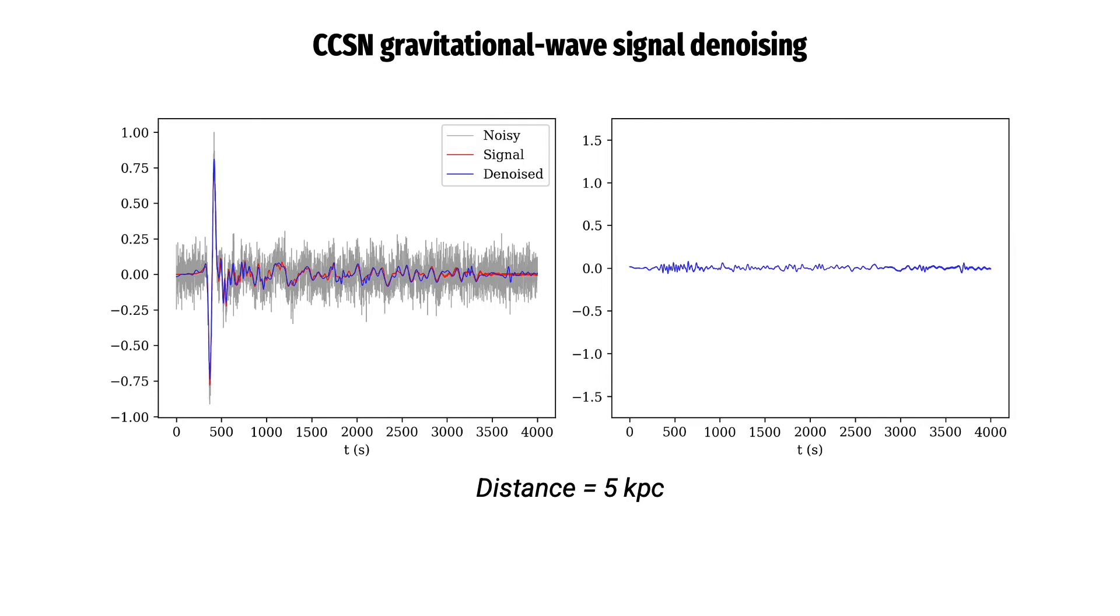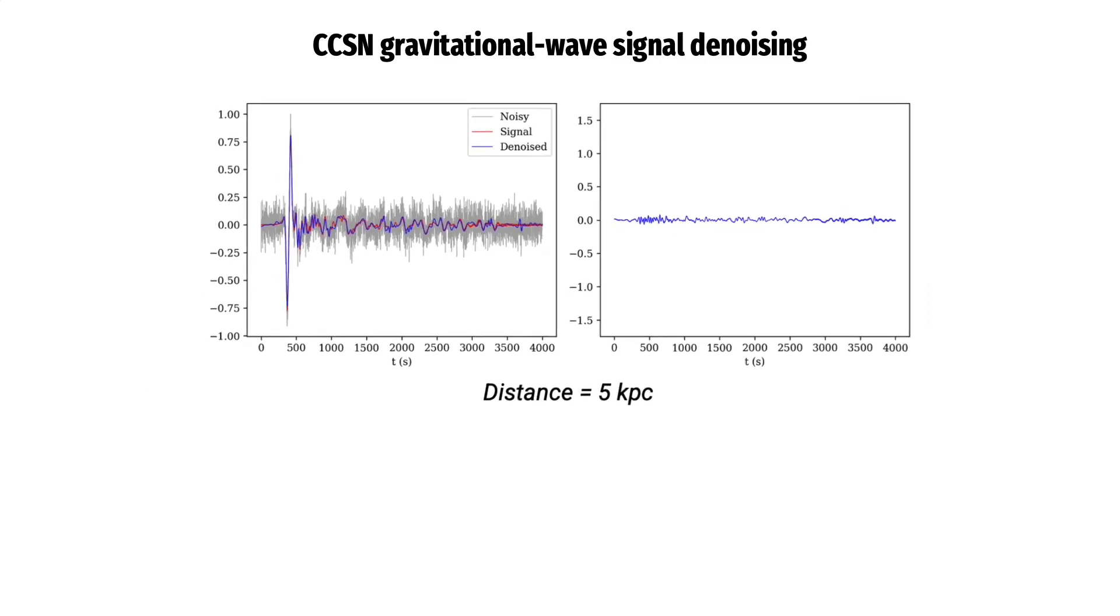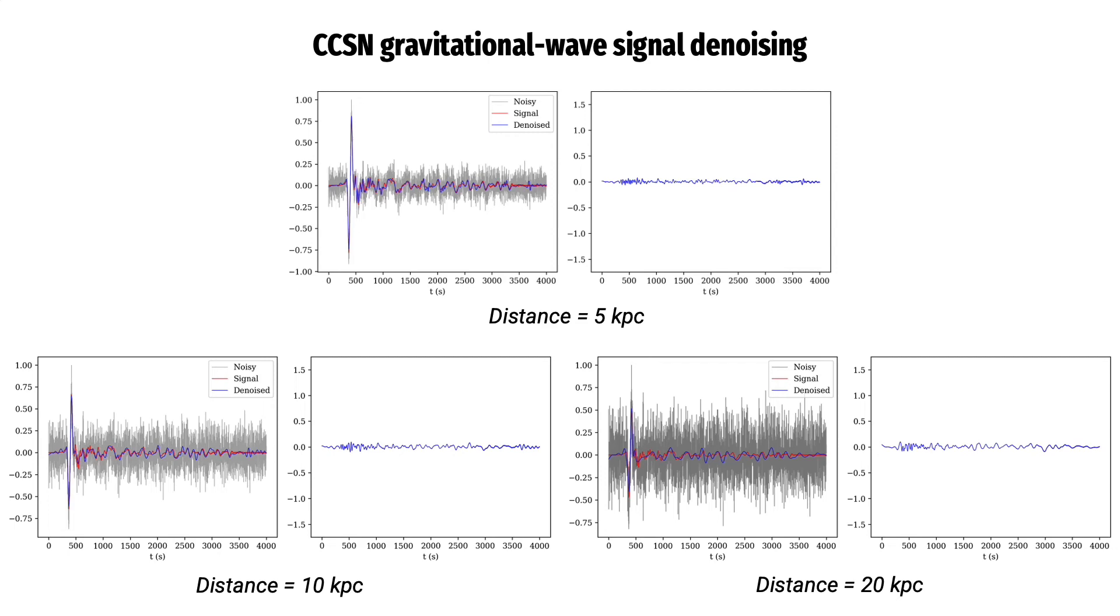In the test case for gravitational waves from core collapse supernovae, we obtain these results. On the left are the noisy input signal, the pure signal, and the denoised signal superimposed. To the right is the difference between the pure signal and the denoised signal we obtained. We see that the difference is very close to zero, which is the ideal case. This holds true even for signals embedded in more noise, as shown here.